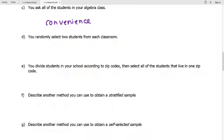D, we randomly select two students from each classroom. So they're already divided into classrooms. We randomly select two students from each of those groups. This is the stratified sample example.